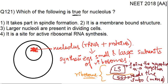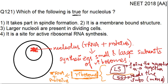For the formation of ribosome, nucleolus is necessary. Why? Because ribosome is made up of ribosomal RNA and proteins, and ribosomal RNA and proteins are present in nucleolus. So nucleolus is the site for ribosome synthesis, and it is also a site for active ribosomal RNA synthesis. Only when the ribosomal RNA is synthesized can you make a ribosome out of it. So our correct option is option number 4.